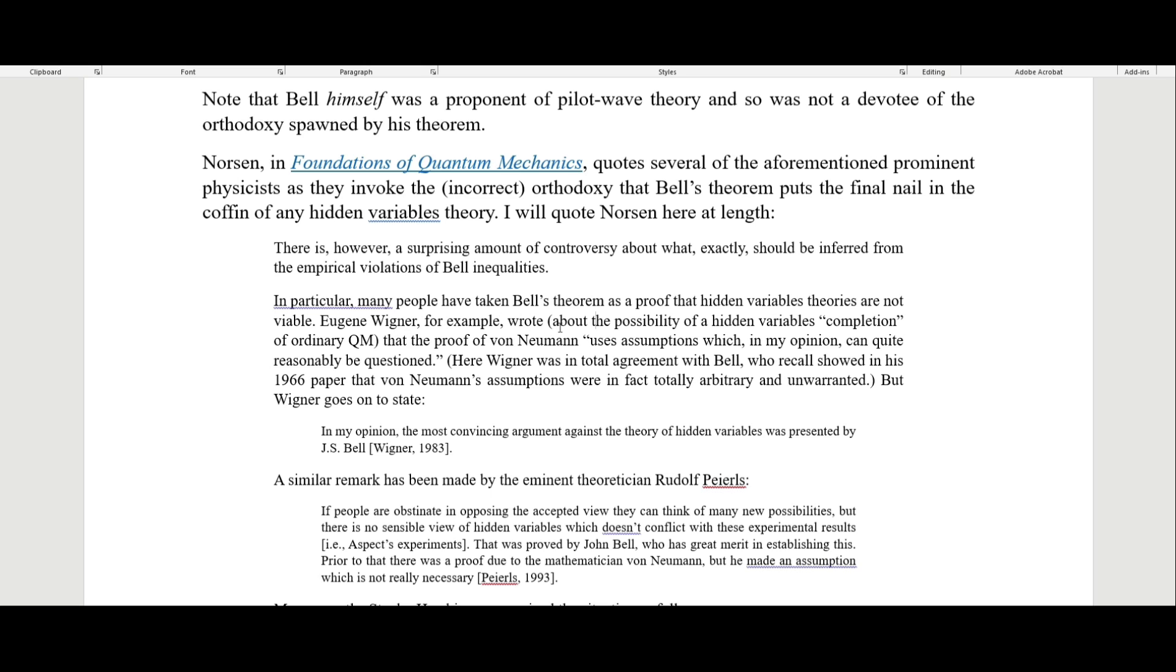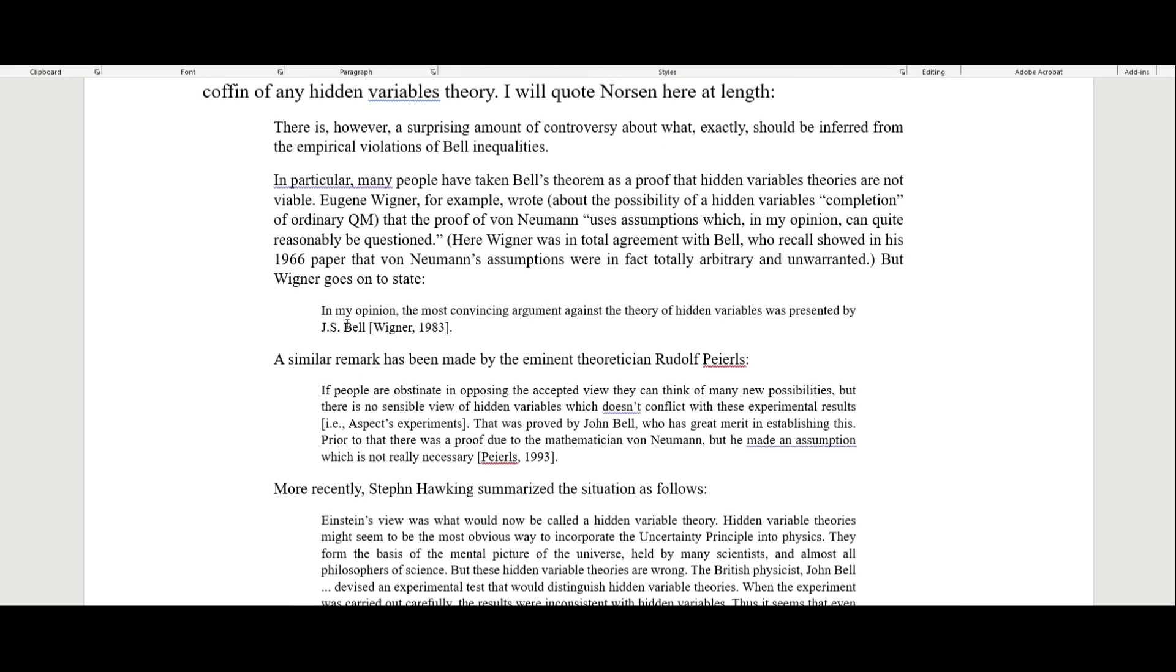Eugene Wigner, for example, wrote about the possibility of a hidden variables completion of ordinary quantum mechanics, that the proof of von Neumann uses assumptions which can be quite reasonably questioned. Wigner was in total agreement with Bell, who showed in his 1966 paper that von Neumann's assumptions were totally arbitrary and unwarranted. But Wigner goes on to note: In my opinion, the most convincing argument against the theory of hidden variables was presented by J.S. Bell.